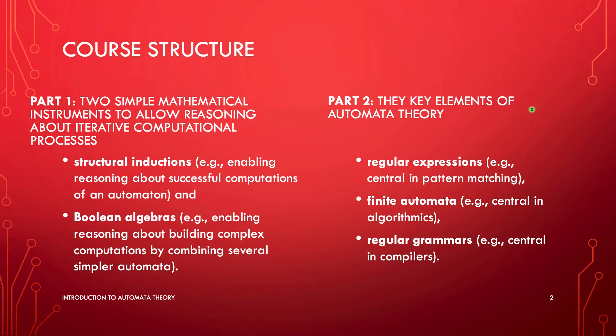In the second part of the course, we are going to introduce the key elements of automata theory. We will discuss regular expressions, which are central, for example, in pattern matching. We will discuss finite automata, central for example in algorithmics. And regular grammars, very important, for example, in compilers for programming languages.